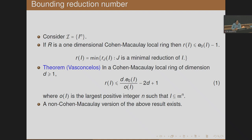If R is a one-dimensional Cohen-Macaulay local ring, then r(I) ≤ E_0(I) − 1, where r(I) is the minimum of all reduction numbers r_J(I). Later, Vasconcelos proved that in any positive dimension, r(I) is bounded above by D times the multiplicity divided by the order of I, minus 2D + 1, where the order is the largest positive integer n such that I ⊆ M^n. This is the best bound known for higher dimensions, but it is large — larger than what we have obtained.